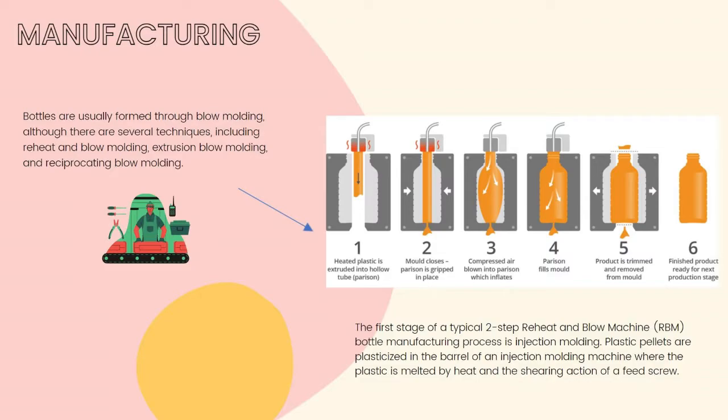PET preforms are easily shipped to bottling facilities as they are much more compact than fully formed bottles. During the reheat process, the preforms are loaded into a feeder and run through an unscrambler, which orients them for feeding into the blow molding machine. The preforms are heated by passing by quartz heaters and then enter the mold. Here, a thin steel rod called a mandrel slides into the neck of the preform, fills it with highly pressurized air, and stretch blow molding begins.